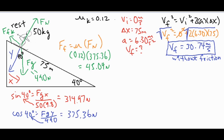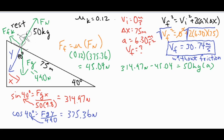The only difference now is we'll have a different, smaller acceleration because friction opposes the slide. We take 314.97 newtons directed down the hill and subtract the force of friction: 314.97 − 45.04 = ma. Dividing both sides by 50, we get an acceleration of 5.40 meters per second squared.